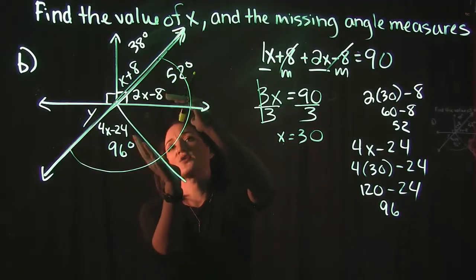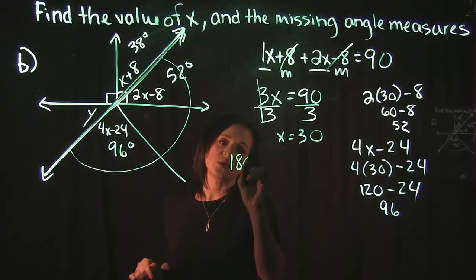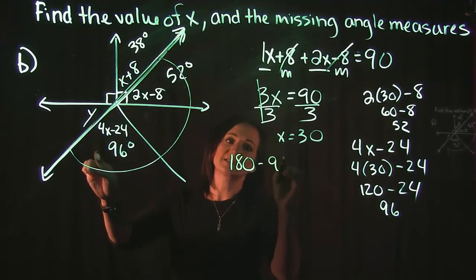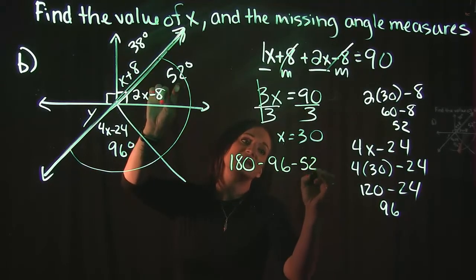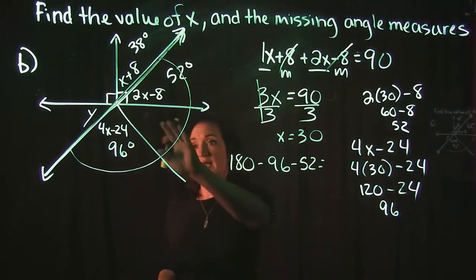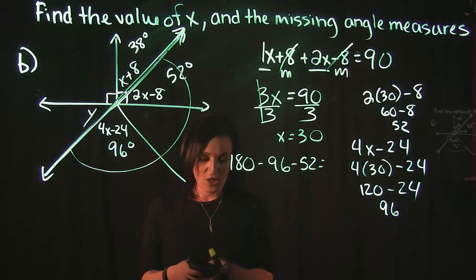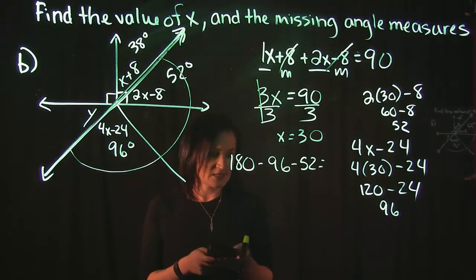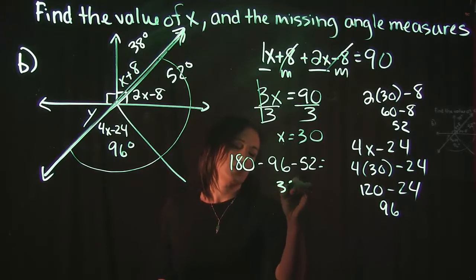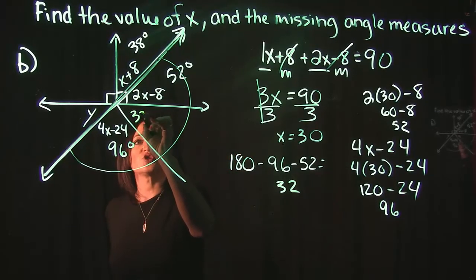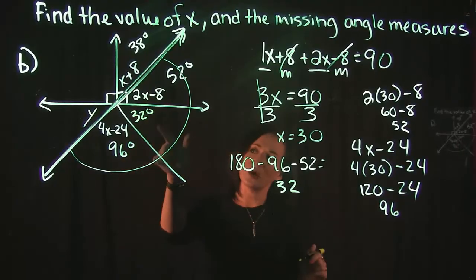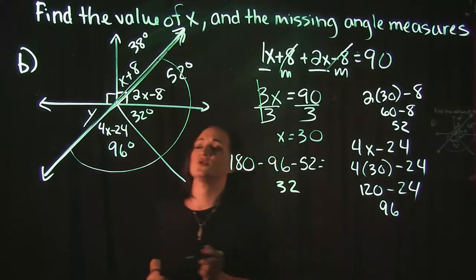So if we subtract away this, we're going to find the missing piece. So we do 180 minus 96 minus 52 is going to get us this missing piece here. So 180 minus 96 and then minus 52 leaves us with 32 degrees. So we know that this piece here is 32 degrees.